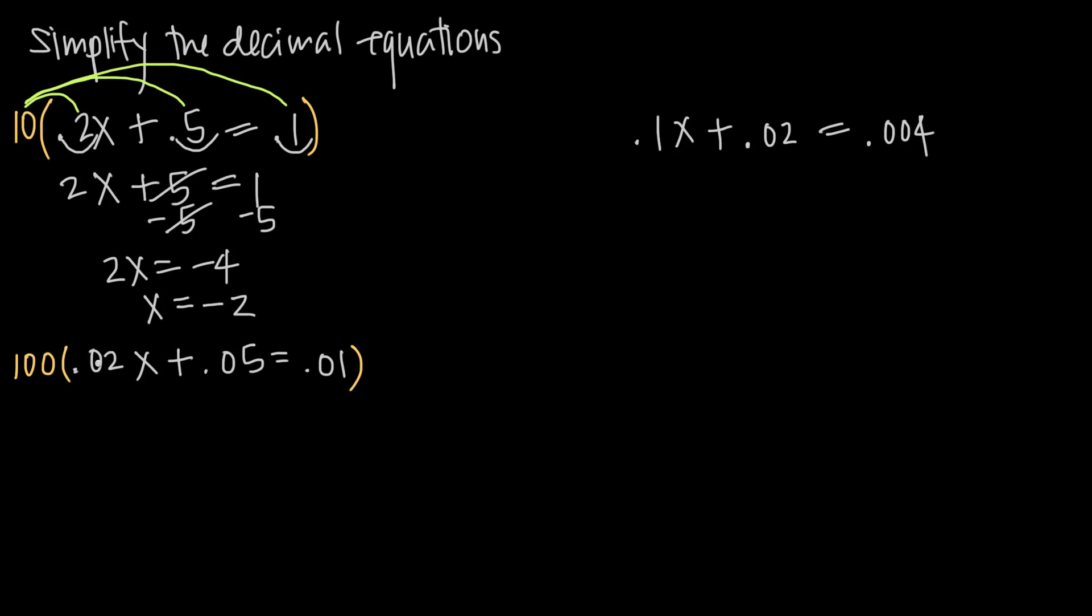So 100 times .02, remember when we multiply by 100, we move the decimal point over two places, and so we're going to end up with 2, so we'll have 2x plus 100 times .05 moves the decimal over two places, so I'll get plus 5. And then 100 times .01 moves the decimal over two places, so I get 1. And again, I have the same thing here, so I already know that x is going to be equal to negative 2.